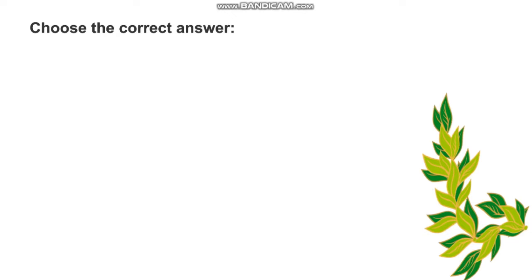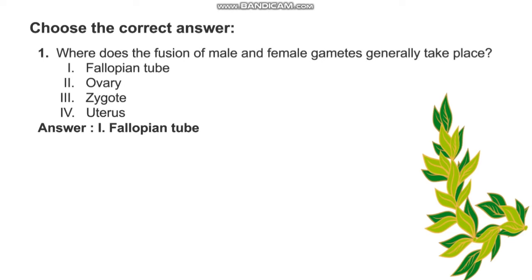Choose the correct answer. Where does the fusion of male and female gametes generally take place? The options are: fallopian tube, ovary, zygote, uterus. The answer is fallopian tube.